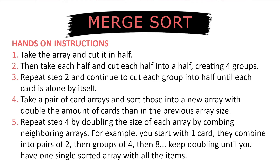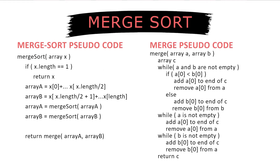Let's try to do the merge sort algorithm with a deck of playing cards. This video is meant to be an introduction to merge sort, but further coding practice will be needed to truly understand how the recursive calls work. As a reminder, recursion is when a function calls itself. As you can see, the merge sort code calls itself twice with array A and array B.